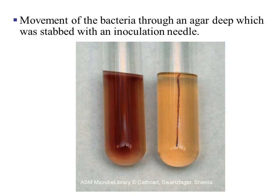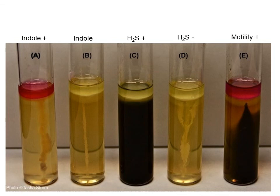By utilizing an agar deep, you can differentiate if the microbe has flagella or cilia. If it has those cytoskeletal filaments, it will be able to move. On the far right test tube, the microbe was stabbed into an agar deep. The one on the left clearly moved and distributed its red pigment throughout the entire test tube. The SIM test can differentiate if an organism is indole positive, hydrogen sulfide positive, or motile.